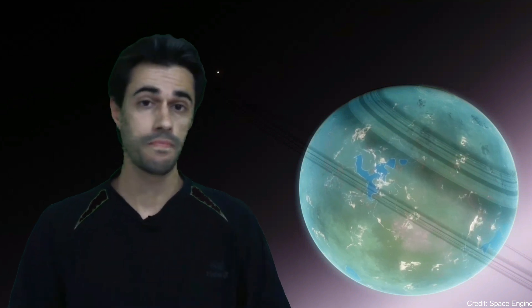LIS-273b orbits the red dwarf star Luiten, located 12 light years away. The exoplanet is 84% similar to Earth.